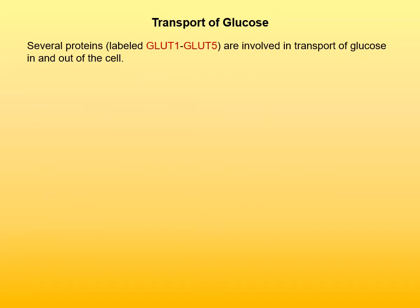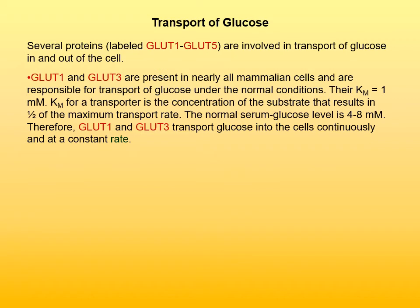In the course of metabolism, glucose is transported in and out of cells, and various transporters are involved. Here is a brief overview of the most important transporters, labeled as GLUT transporters — GLUT 1 through 5 are the most important. GLUT-1 and GLUT-3 are present in nearly all mammalian cells and are responsible for transport of glucose under normal conditions. Their Km is 1 mmol, meaning at that concentration one half of the maximum transport rate is reached. Since normal serum glucose level is 4 to 8 mmol, they are usually fully saturated and continuously transport glucose at a constant rate.